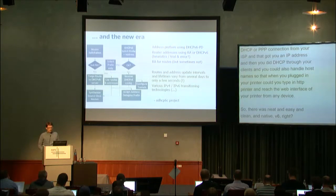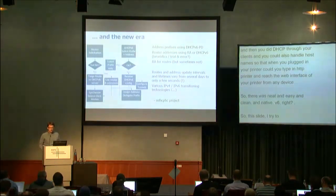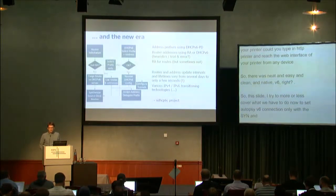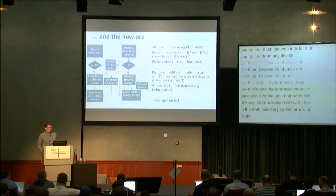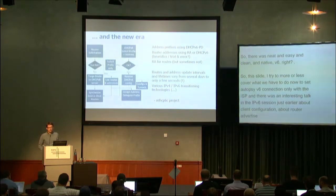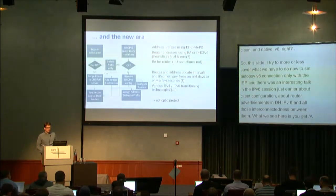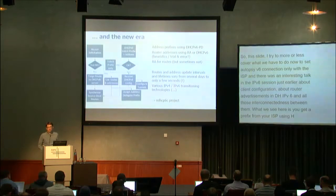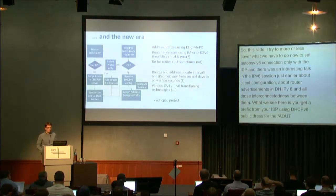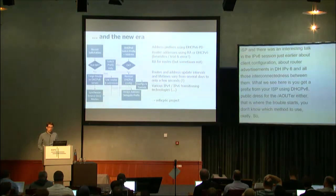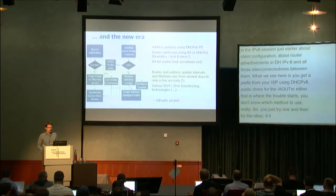This slide covers what we have to do to set up an IPv6 connection only with the ISP. There was an interesting talk earlier about client configuration, router advertisements, and DHCPv6. Now what we see is you get a prefix from your ISP using DHCPv6 PD, and a public address for the router using either RA or DHCPv6 — that's where the trouble starts. You don't know which method to use, so you just try one and then try the other if it fails, because there's no sane fallback path.